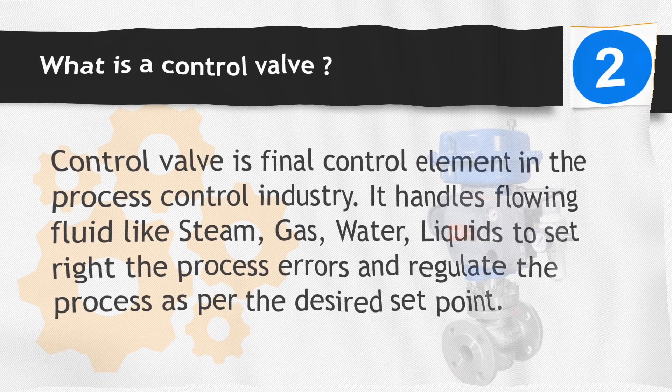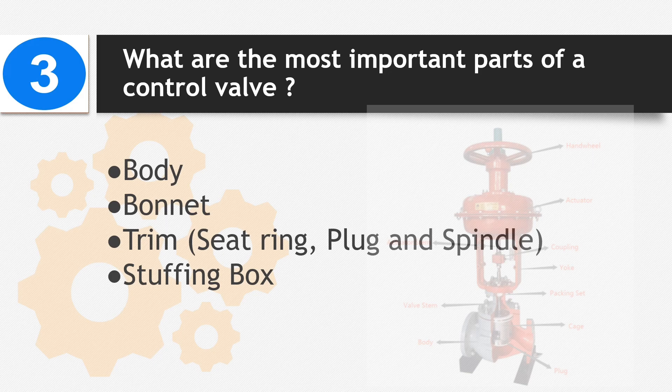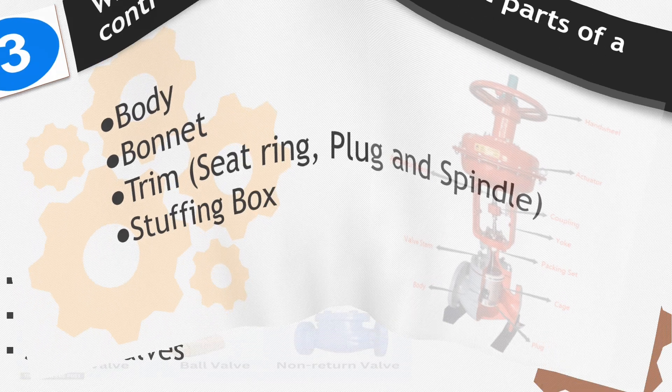Number 3: What are the most important parts of a control valve? Body, bonnet, trim, seat ring, plug and spindle, and stuffing box.